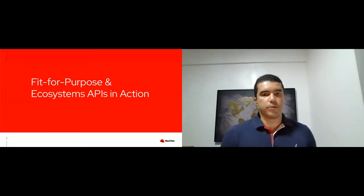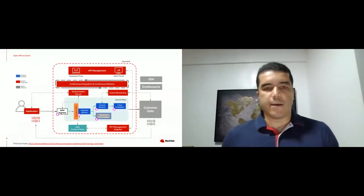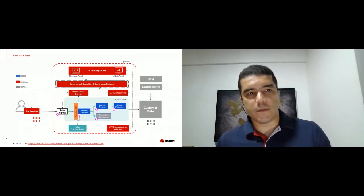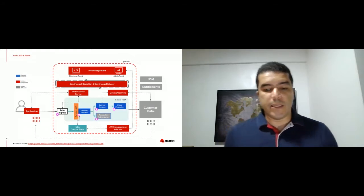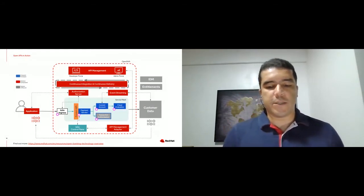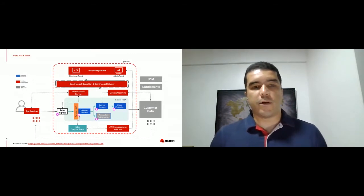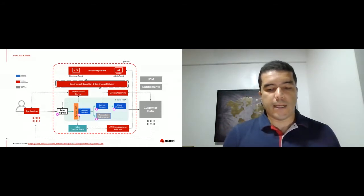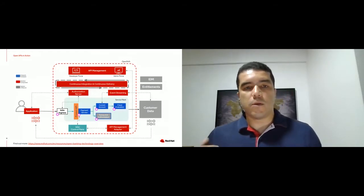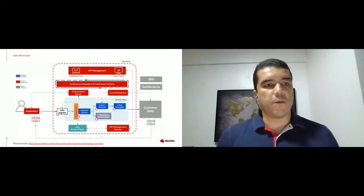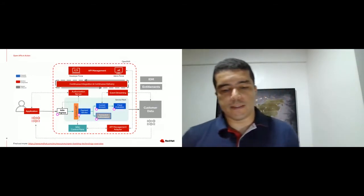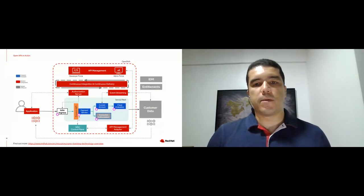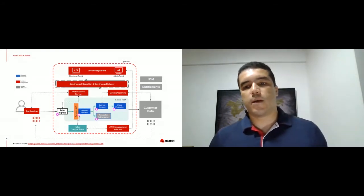Moving on to the context of APIs in banking — this is how containers can simplify application and API deployment and portability across platforms. In this open API platform, Red Hat OpenShift serves as the underlying container platform. On top of this, you have the 3Scale API manager and also Fuse for the integration components, plus authorization servers based on Red Hat Single Sign-On. Other aspects of integration include event streaming based on AMQ Streams, based on Kafka.